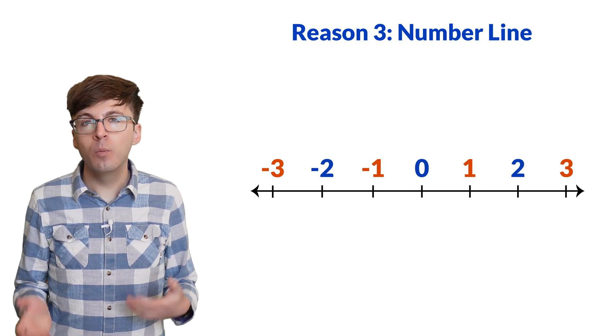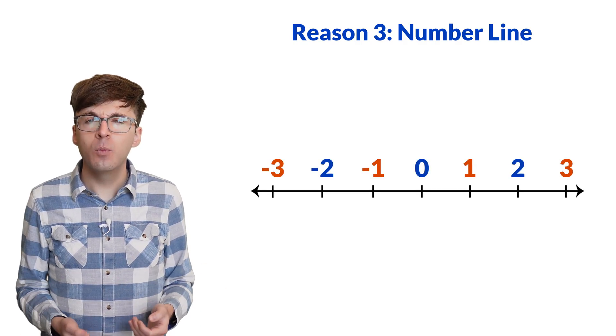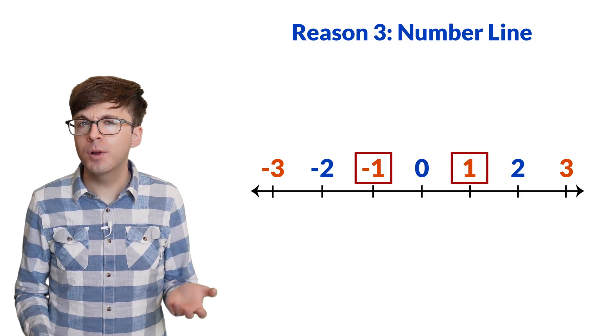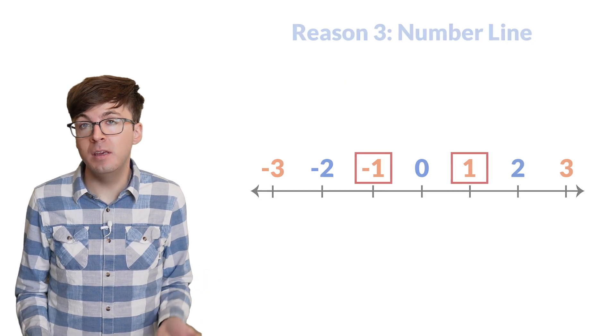For reason 3, let's check the integers on a number line. When we label the even and odd integers, we notice that 0 is between two odd integers. To avoid breaking the pattern, 0 should be even.